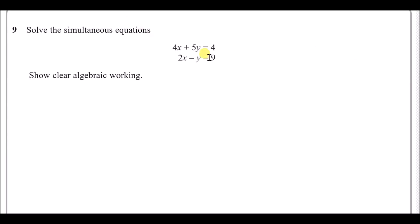Number nine: solve the simultaneous equations. Both are linear — no squared terms. The strategy is to make the coefficients of x or y equal. It's easy to double 2x to get 4x, so double the second equation. This gives 4x minus 2y equals 18, while the first equation stays the same.